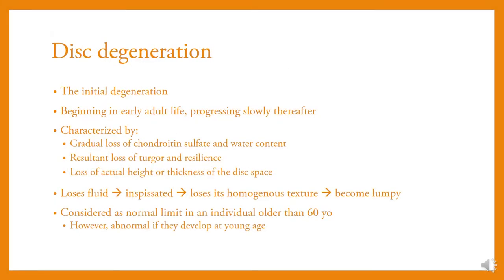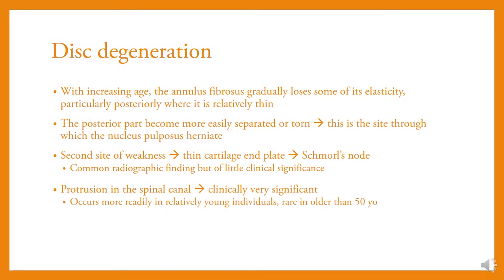Initial degeneration begins in early adult life, progressing slowly thereafter, characterized by gradual loss of chondroitin sulfate and water content, resultant loss of turgor and resilience, and loss of actual height or thickness of the disc space. The nucleus pulposus loses its homogeneous texture, becomes lumpy, and is considered a normal finding in individuals older than 60 years. With increasing age, the annulus fibrosus gradually loses its elasticity; posterior parts become more easily separated or torn. The thin cartilage end plate is a second site of weakness, and protrusions into the spinal canal are clinically very significant.